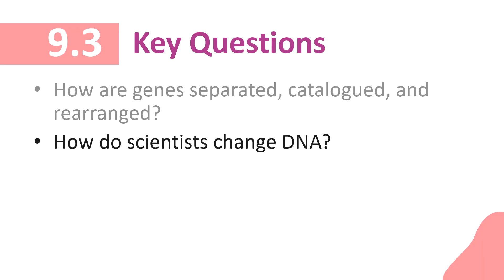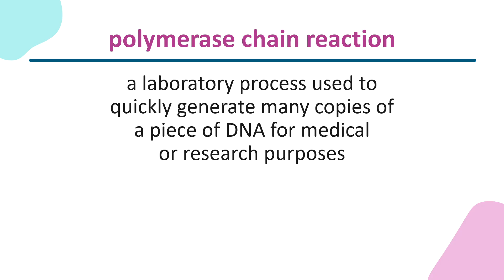But how do scientists change DNA? To put it simply, scientists make several copies of the genes they want to work with, and then they paste these genes back into a DNA strand, where it will then be read, used, and reproduced by the organism with the altered DNA. The first step is to use a laboratory process called polymerase chain reaction to quickly generate many copies of a piece of DNA for medical or research purposes. In essence, the polymerase chain reaction is a process used to add primers in front of genes that we want duplicated. Once this is done, the cell does the rest of the work in duplicating the segment of DNA.